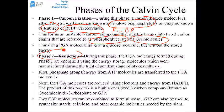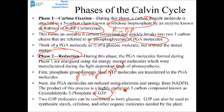Phase 2 of the Calvin cycle is reduction. The PGA molecules formed during phase 1 are energized using ATP and NADPH from the light-dependent reactions. First, phosphate groups and energy from ATP are transferred to PGA — the PGA molecules are phosphorylated. Then the PGA molecules are reduced using electrons and energy from NADPH, forming a three-carbon compound known as glyceraldehyde-3-phosphate (G3P). Think of G3P as half of a glucose with stored energy. Two G3P molecules can be combined to make glucose; G3P is also used to synthesize other sugars and organic molecules like starch and cellulose.